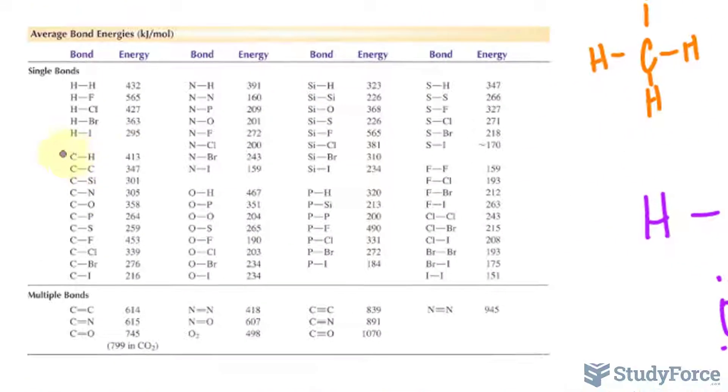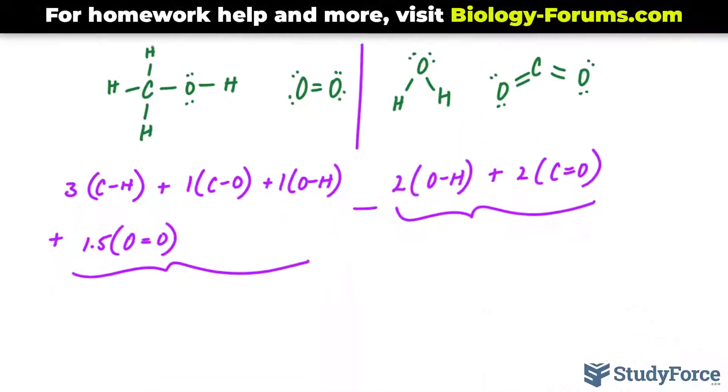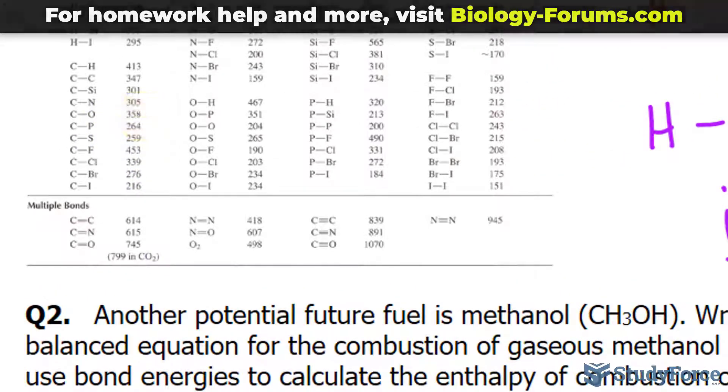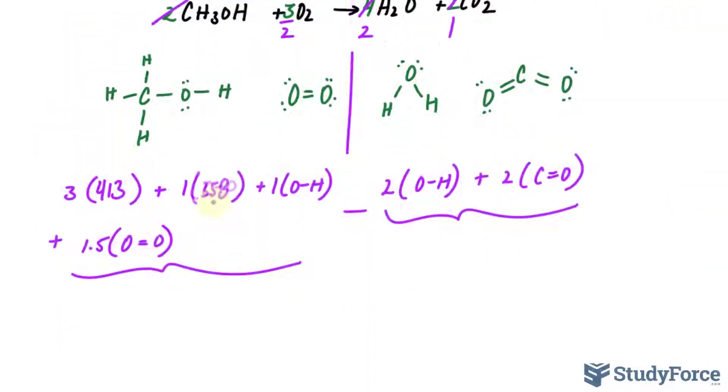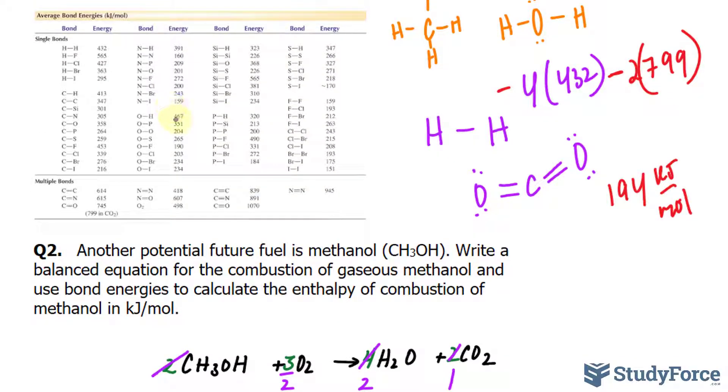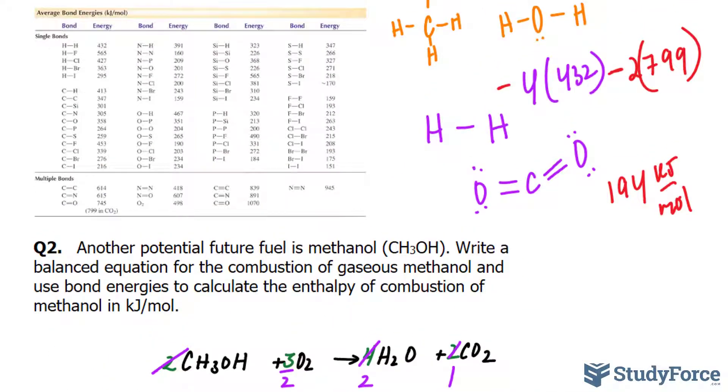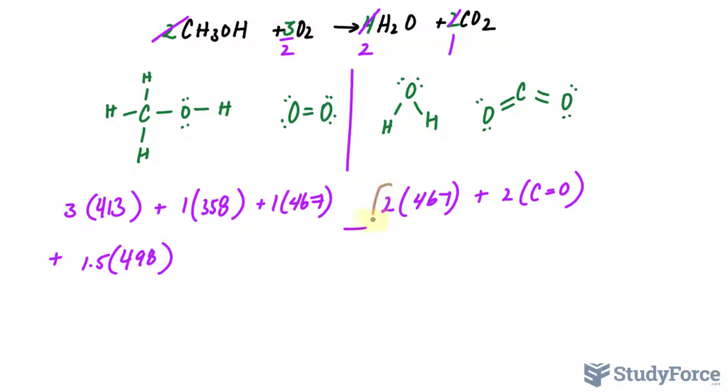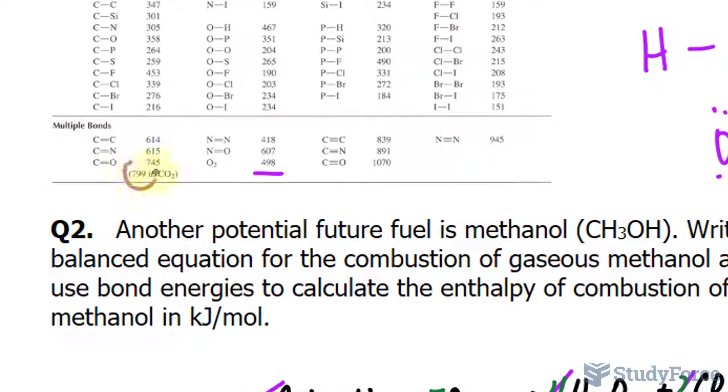Let's use this chart. CH is right here, it's 413. So this should be 413. Next, we have CO, that's right here, it's 358, and then OH, 467. Double bonded oxygens can be found right here, 498. Now on to this, OH, OH as we discovered over here was 467, and at the same time we'll multiply this by the coefficient of 2. Carbon double bonded to oxygen according to the chart is 799.